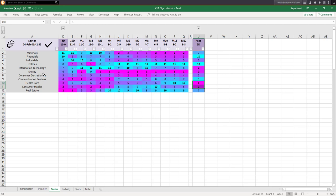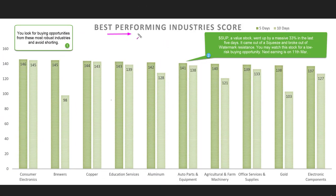That is the decision you can take from the sector level; however, sector level is quite broad. To make more accurate trading decisions, you may drill down into the industry level and look for buying opportunities in strong industries and shorting opportunities in weak industries. Best performing industries: we are looking at the 10 best performing industries of this week, looking at their 5-day and 10-day scores. In the Q360 degrees technique, you look for buying opportunities from the most robust industries and avoid shorting.